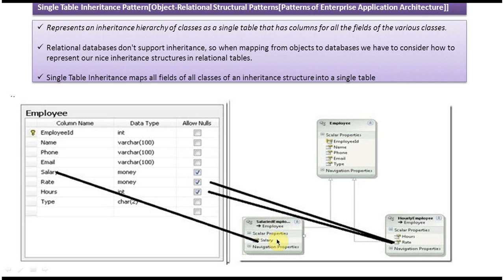SalariedEmployee has only a salary field, and HourlyEmployee has hours and rate fields. Since both subclasses inherit from Employee, SalariedEmployee has the employee fields plus salary, and HourlyEmployee has the employee fields plus hours and rate. The difference is that a salaried employee gets paid on a monthly basis, while an hourly employee gets paid based on how many hours they work per day.